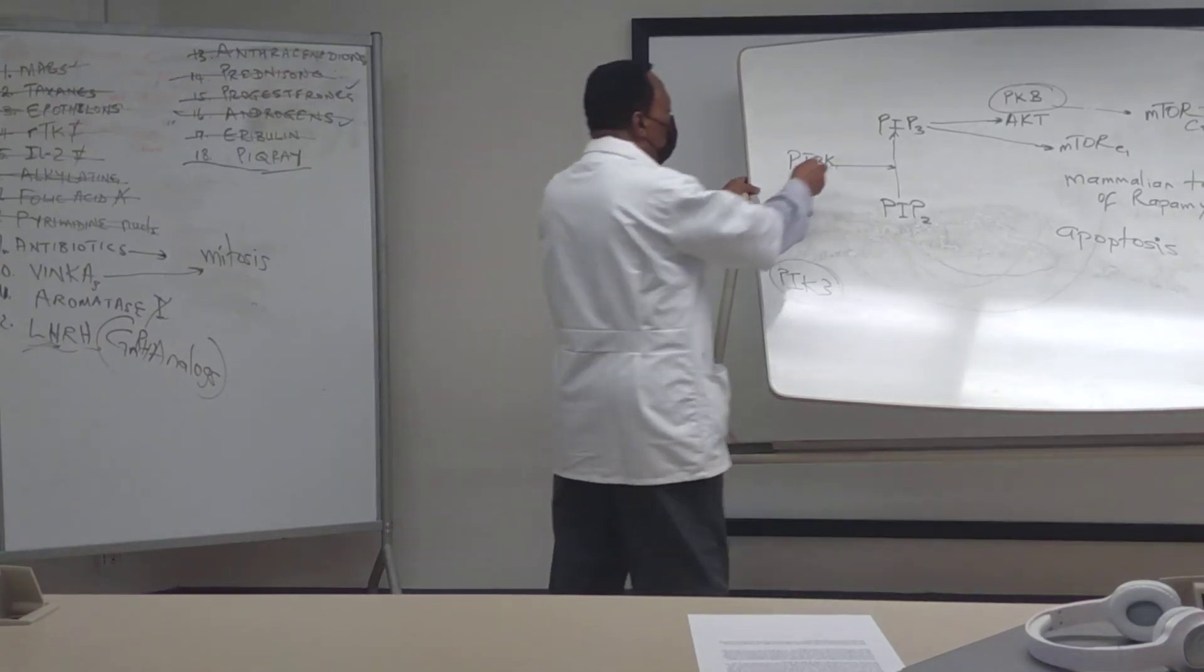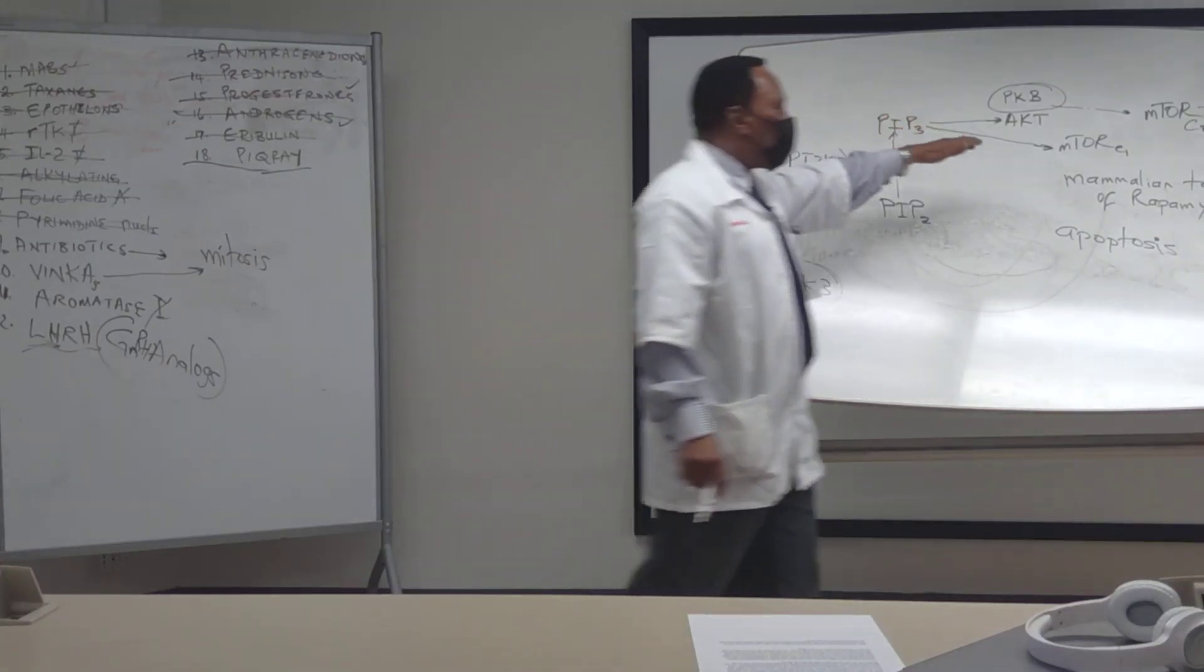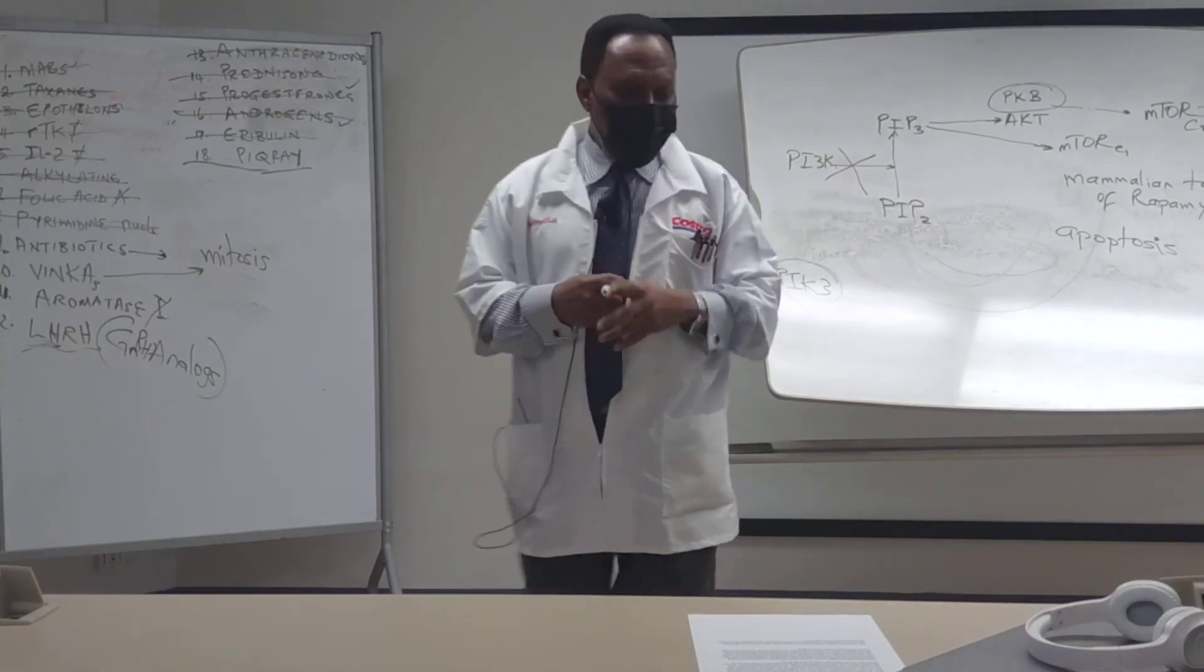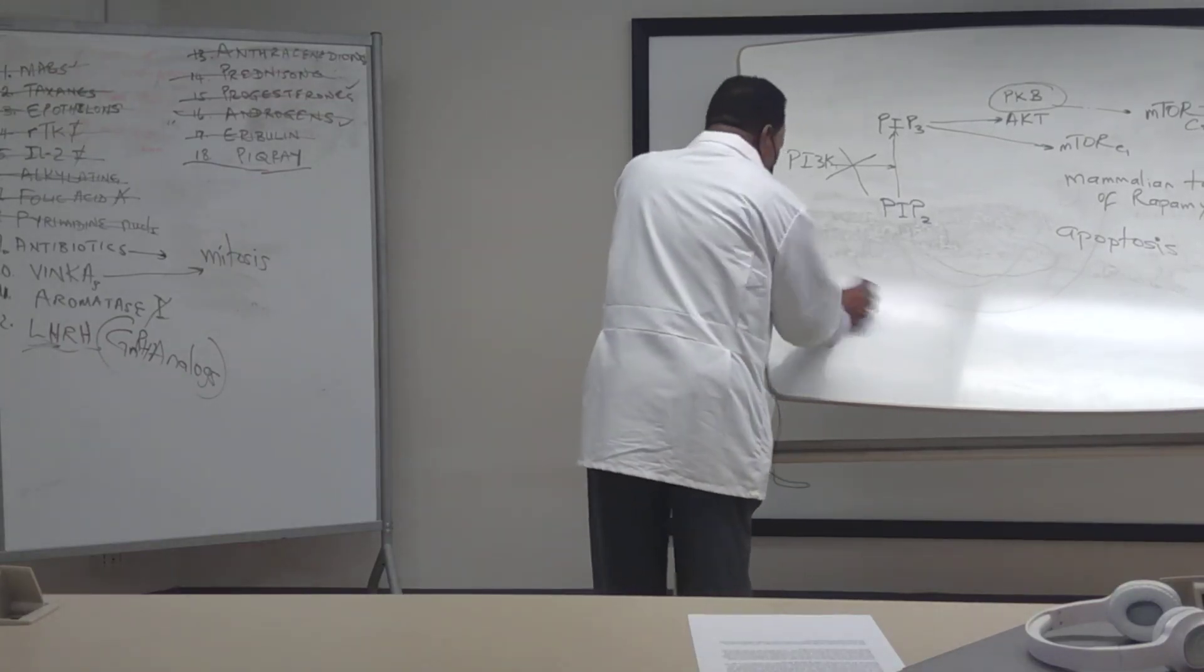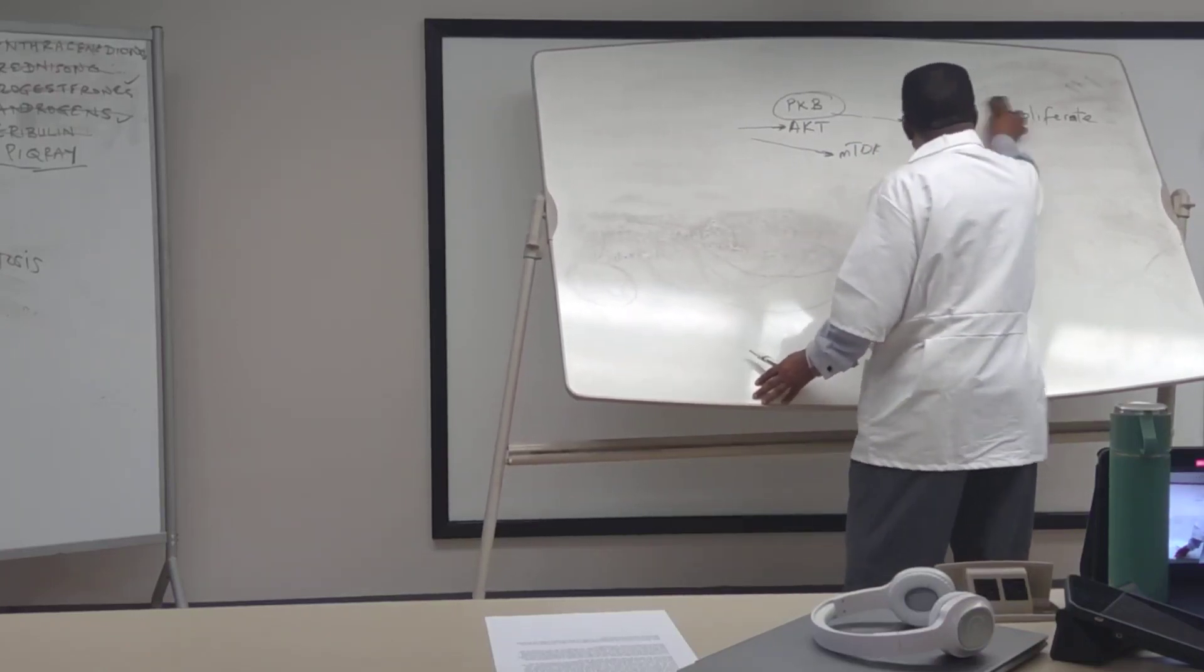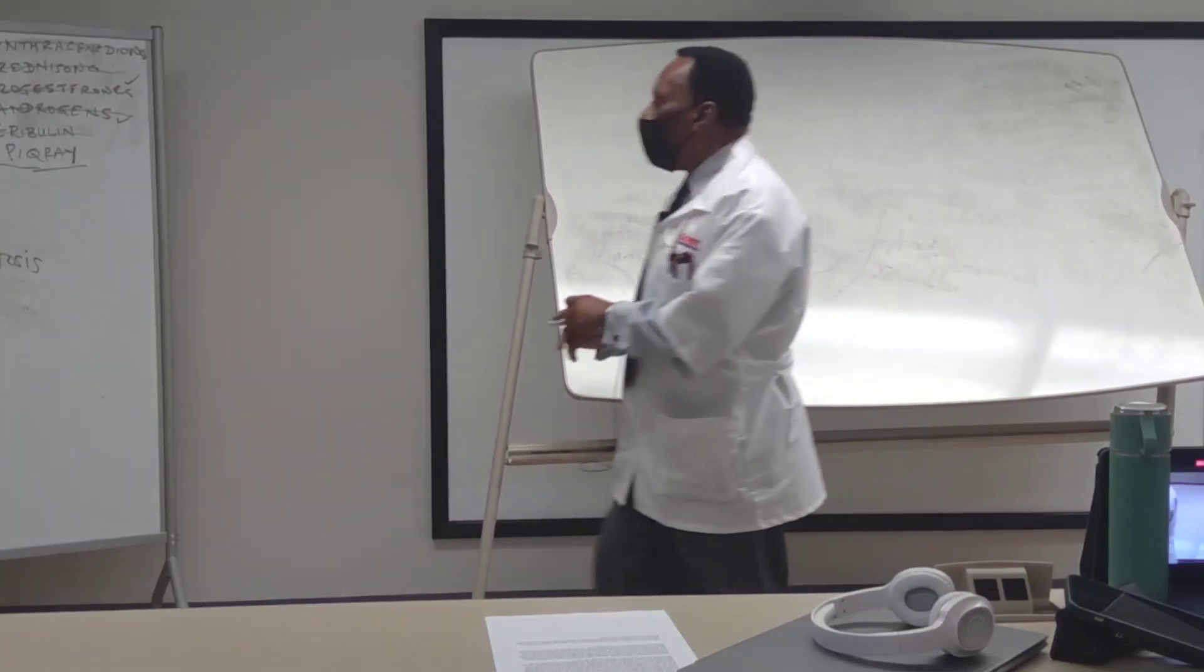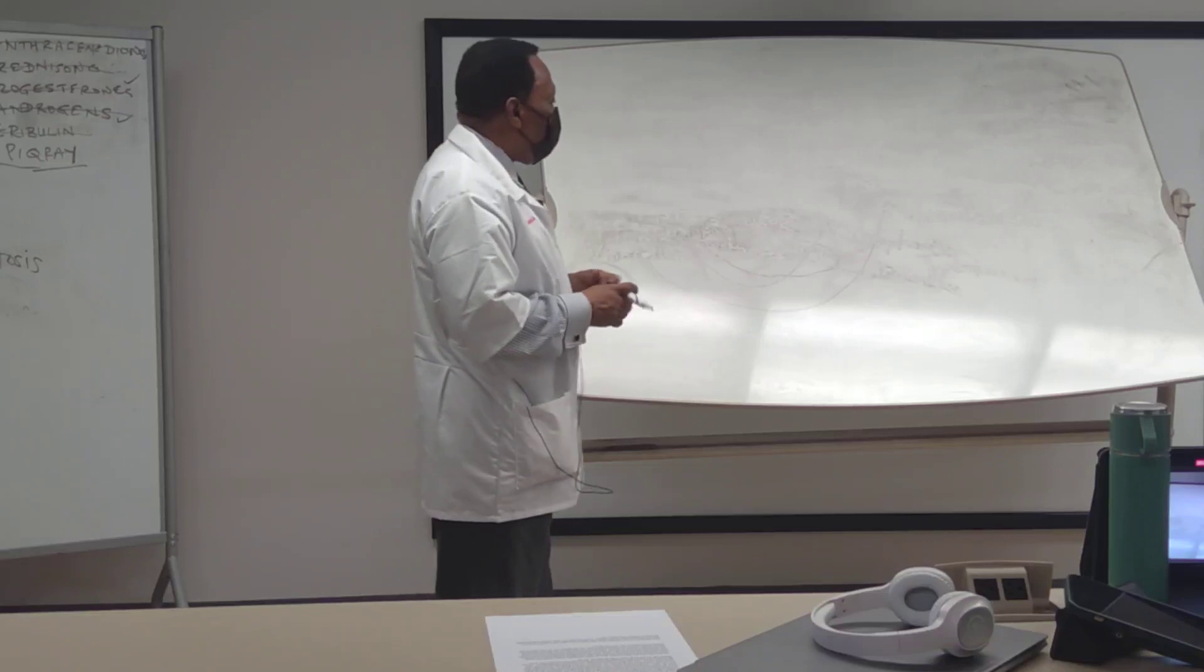So the whole thing then goes back to inhibiting this. So if you inhibit PI3K, then you will not be producing mTOR. So the mTOR pathway is just cut off. And then those cancer cells will not be proliferating the way they want. So the PI3K inhibitor that is used clinically today is alpelisib.